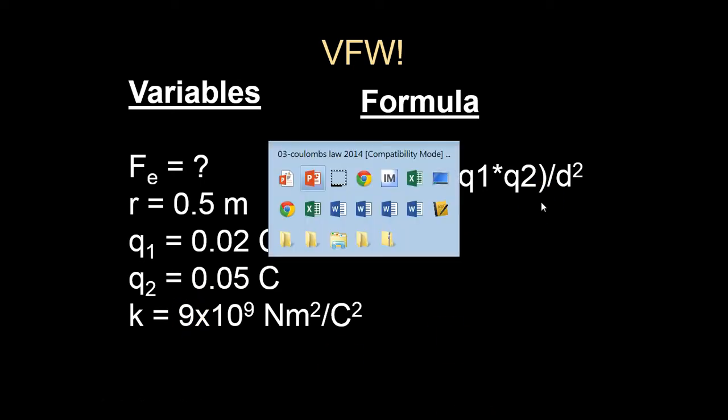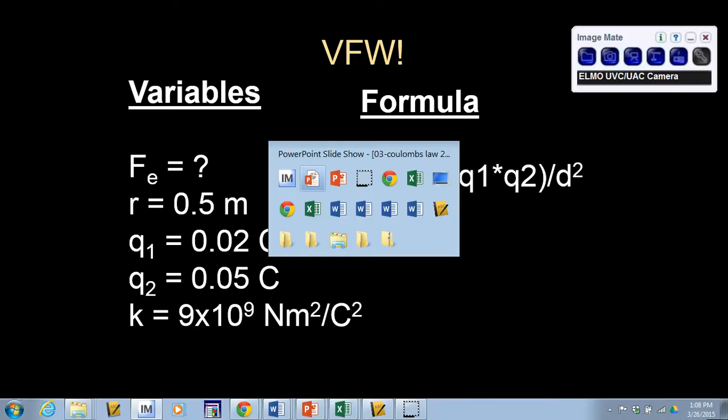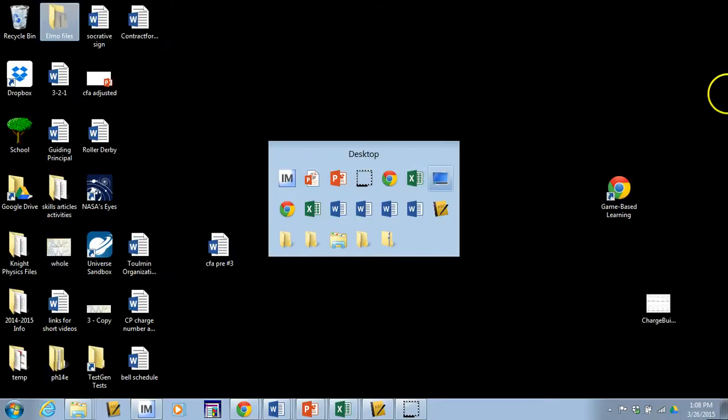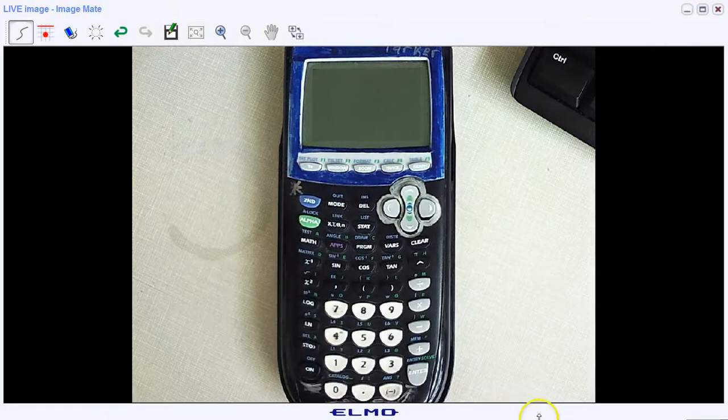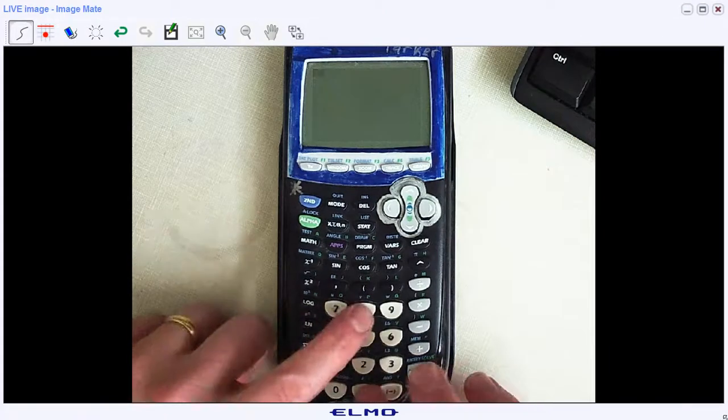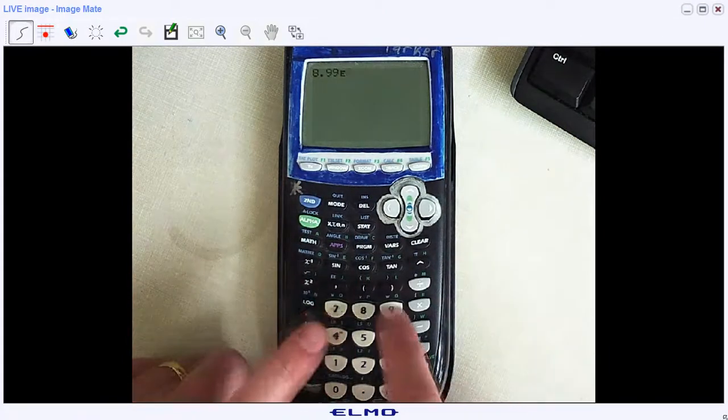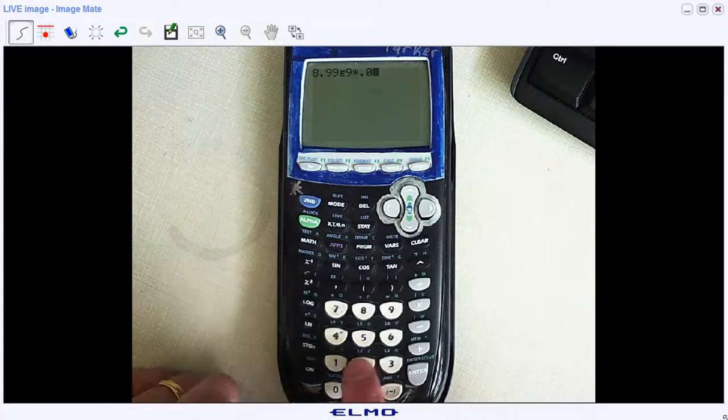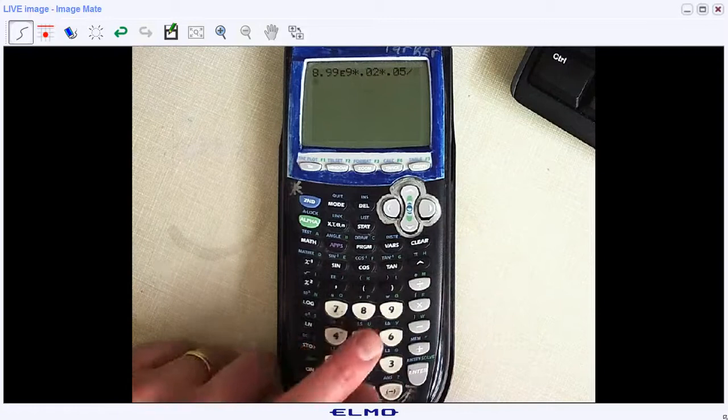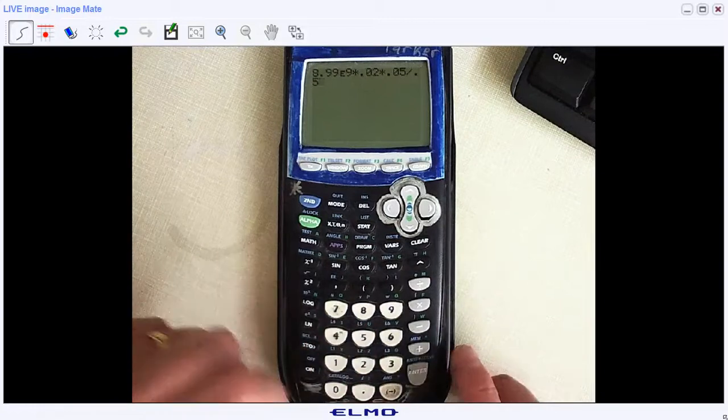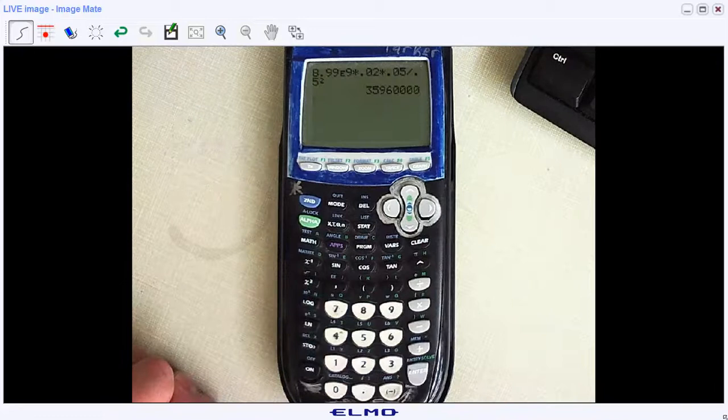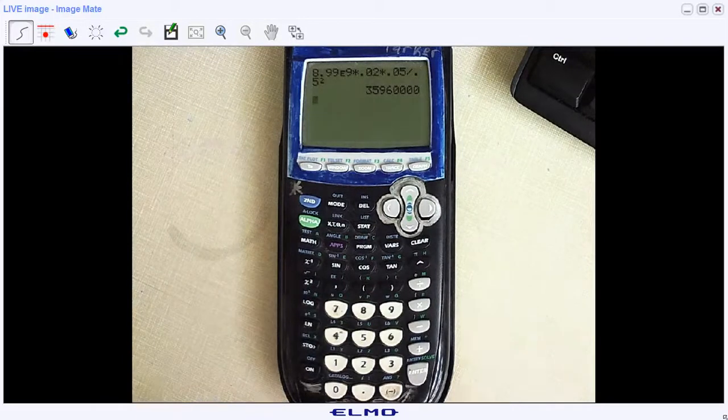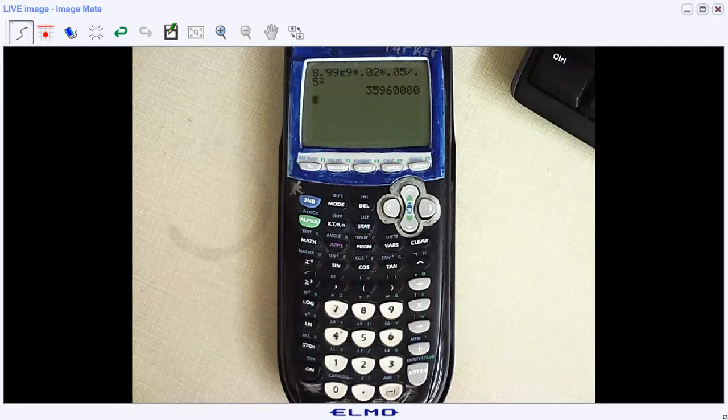Let's do the work. I'm going to do the work right on the calculator. Here we go. So we have 8.99 times 10 to the 9. That's a coulomb constant. Times the first charge. Multiplied by the second charge. Divided by the distance, 0.5. Divided by the distance between them. Notice I'm putting this all in in one shot on the calculator. I'm not going to divide it up into pieces. It's just multiplication and division.